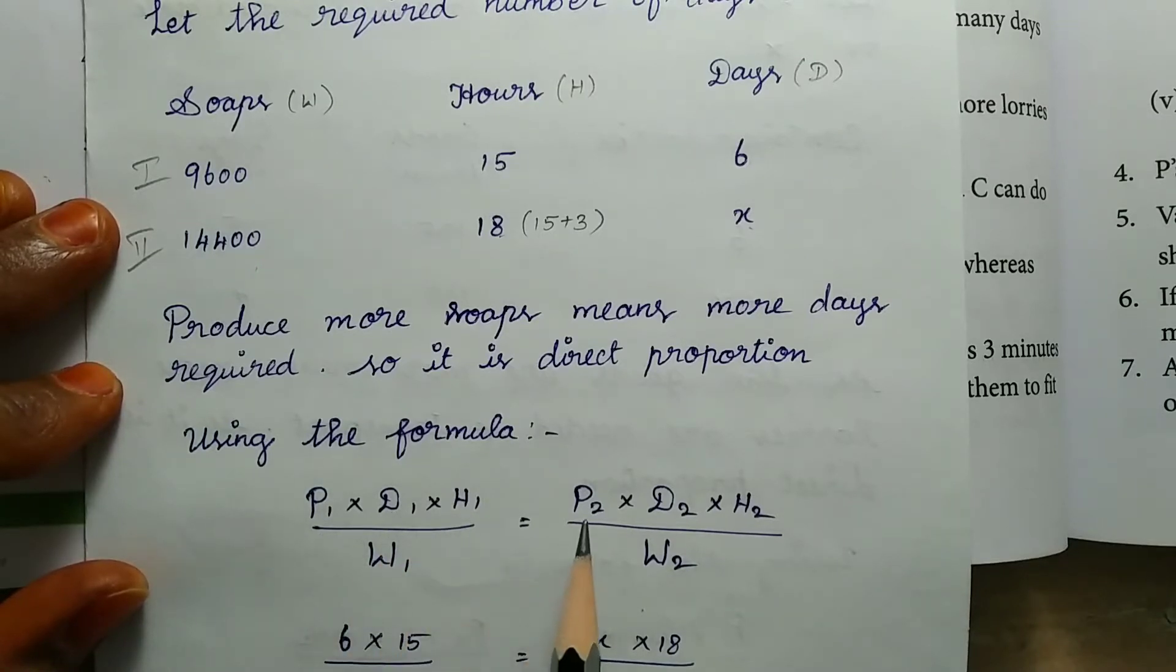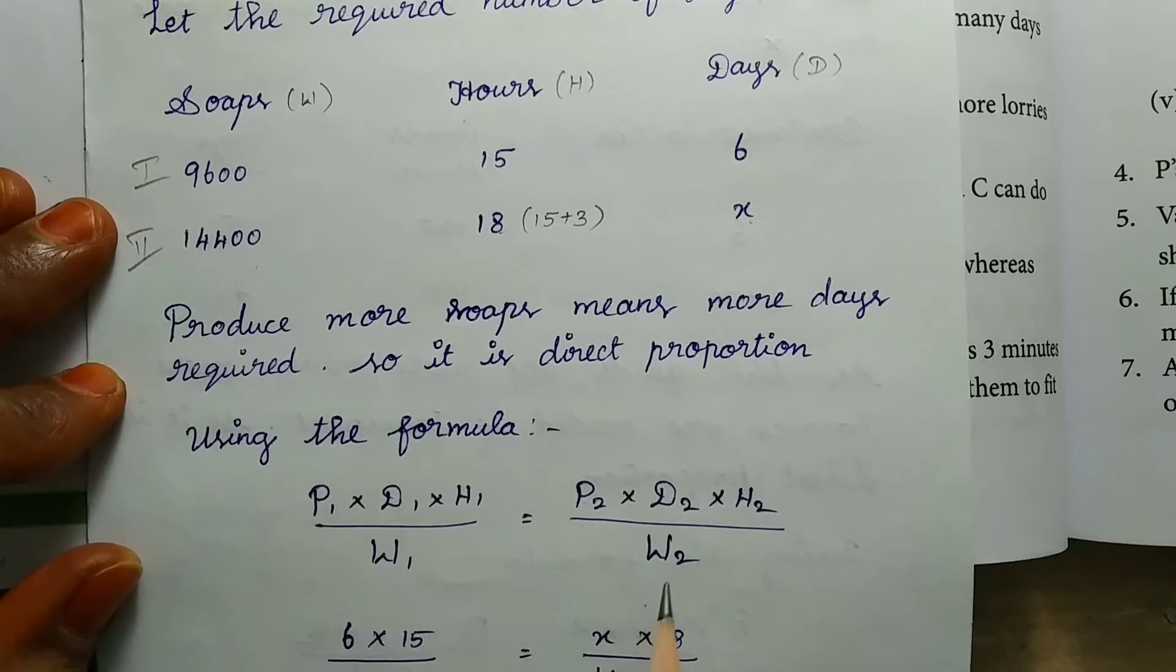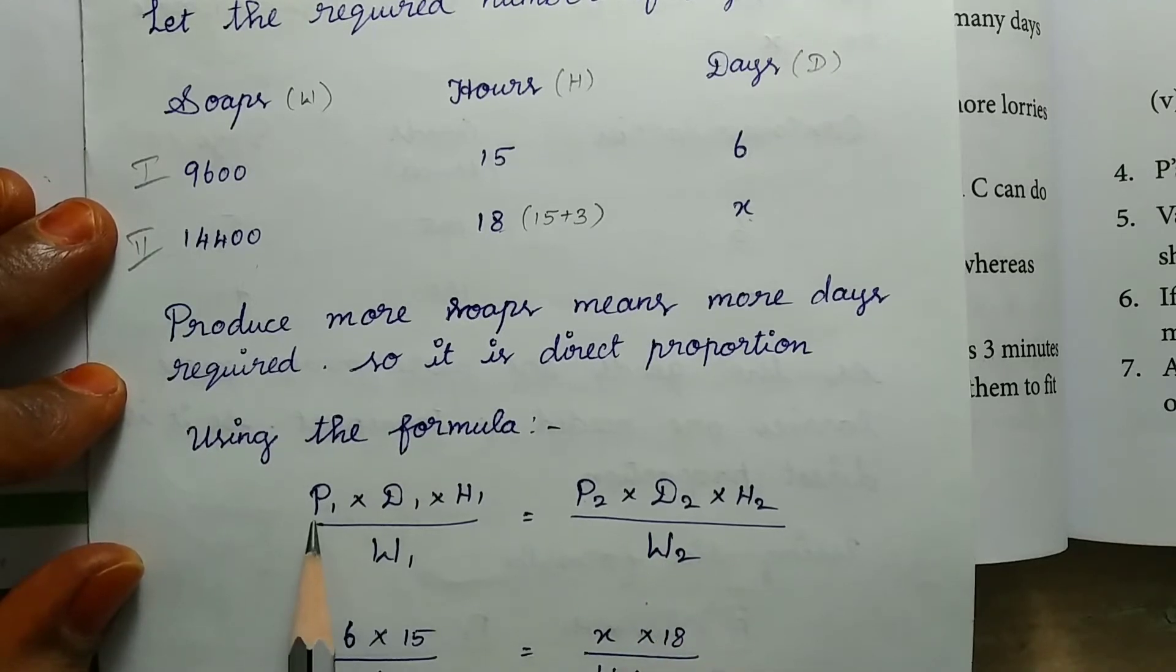This is a direct proportion. Using the formula: P1 is person, D1 is number of days, H1 is hours, whole divided by W1 is work. Then P2 is second quantity, person, days, hours, and work. If we get the person value, we get the number of days, hours, then work is complete.